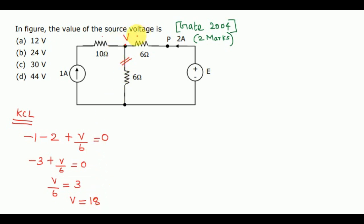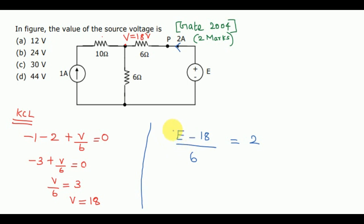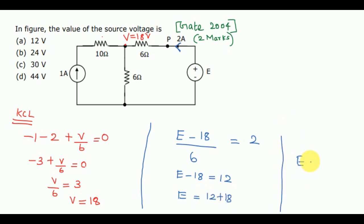Now we got this node voltage as 18 volts. A 2 ampere current flows in this direction through this branch. We can write the equation as: (E − 18) / 6 = 2. Current always flows from higher potential to lower potential, so E is written first and 18 next. On further simplification: E − 18 = 12, and E = 12 + 18 = 30 volts. This is the answer, and the choice is C.